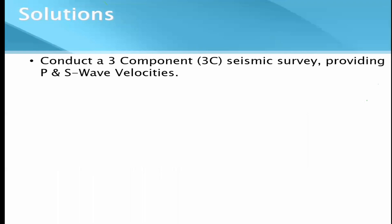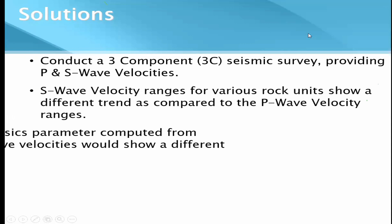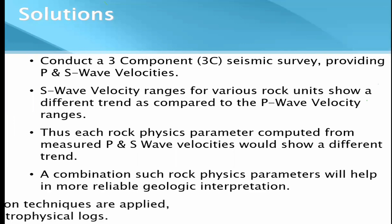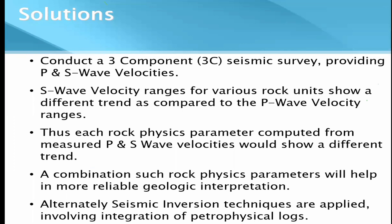The solution is to conduct three-component (3C) seismic surveys which provide both P and S-wave velocities. In such surveys, at each receiver station we have three geophones — one for P-wave and two for the two S-wave components. S-wave velocity ranges of various rock units show a different trend compared to P-wave velocity ranges, so each rock physics parameter computed from both P and S-wave velocities will show a different trend. A combination of such rock physics parameters will help in more reliable geologic interpretation. Alternatively, seismic inversion techniques integrating petrophysical logs can also be used.